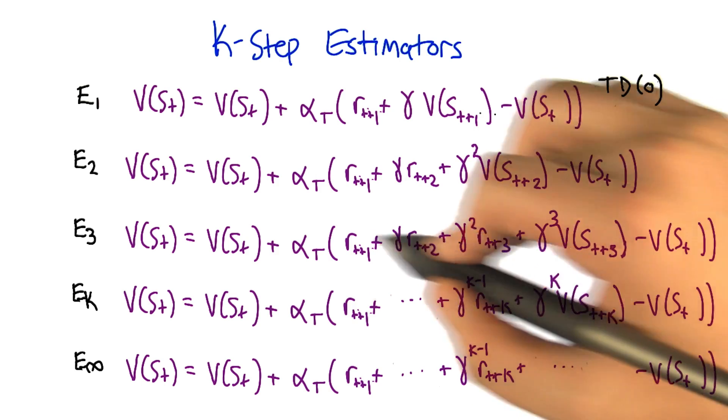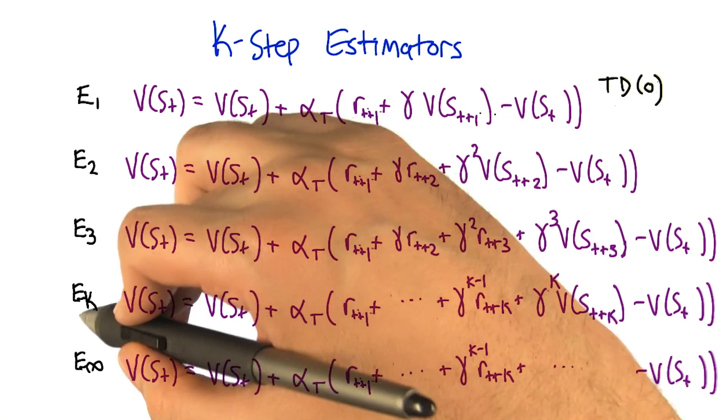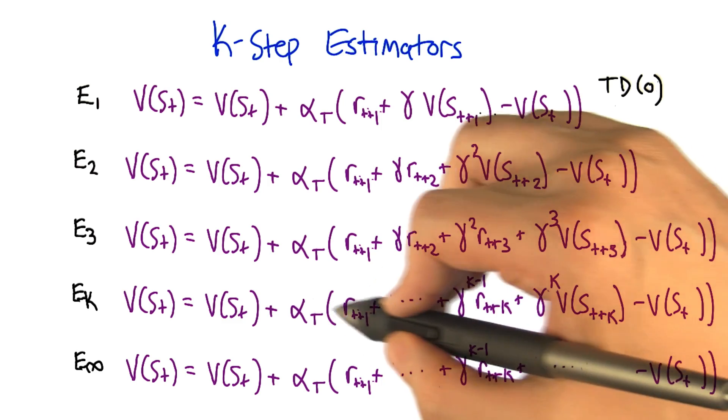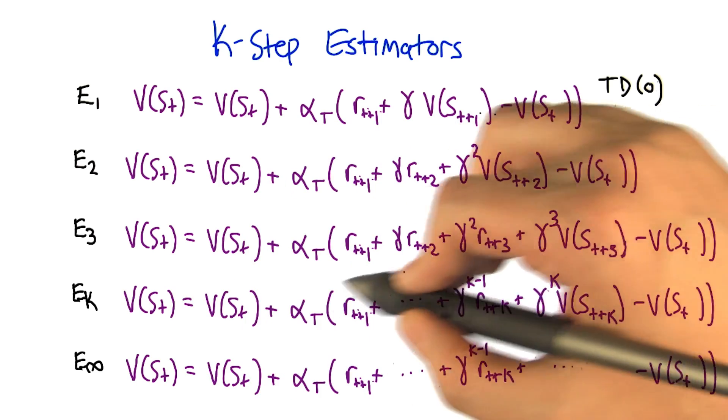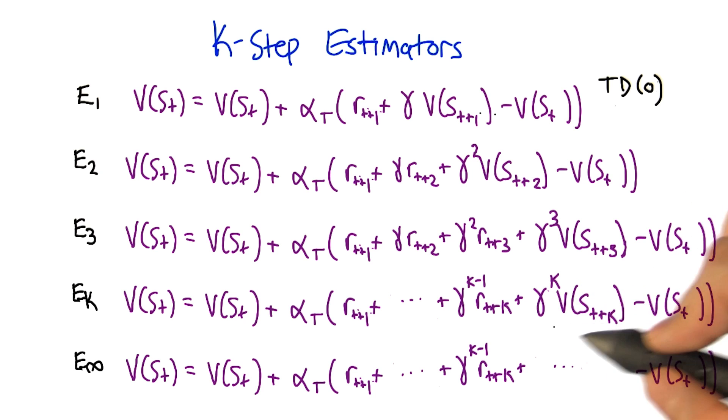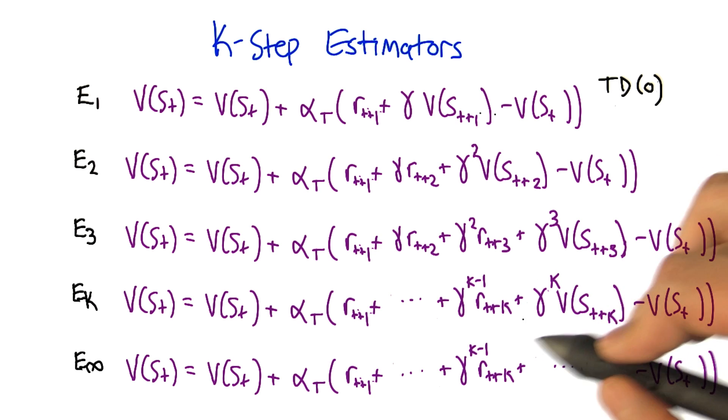And we can do that for three, right here. And we can do that for K, where we're estimating the value of a state by K rewards summed up here, plus, and then we estimate the value of the future by looking at the state we end up in K steps from now and discounting that by K steps.